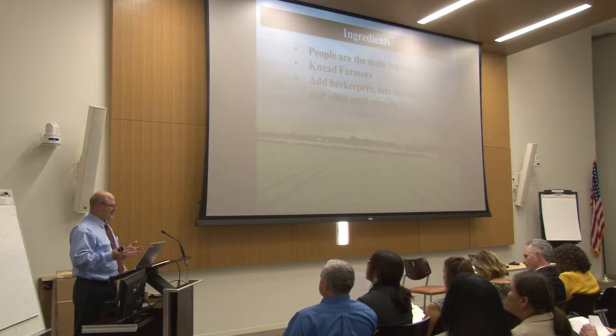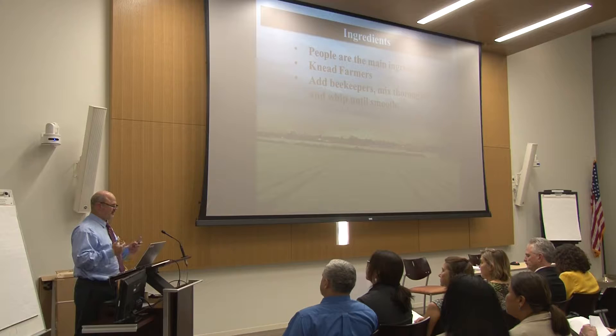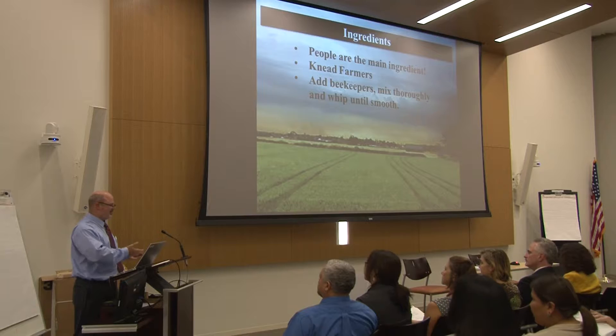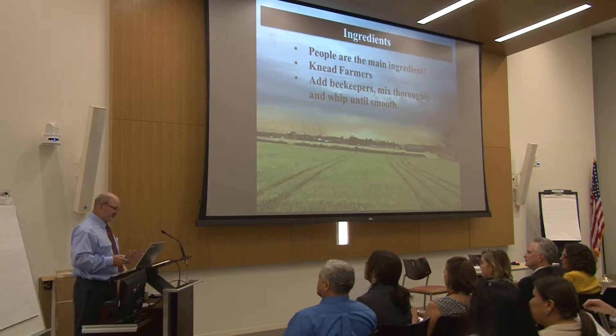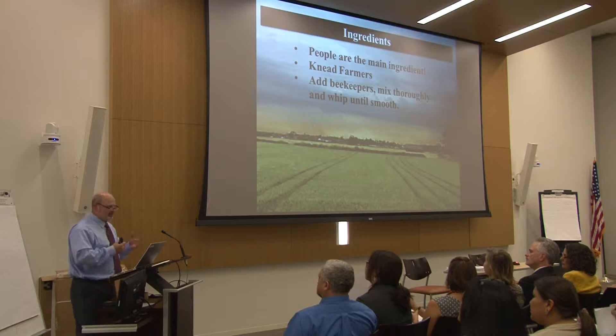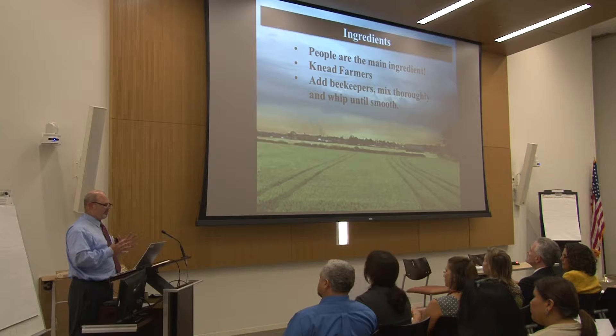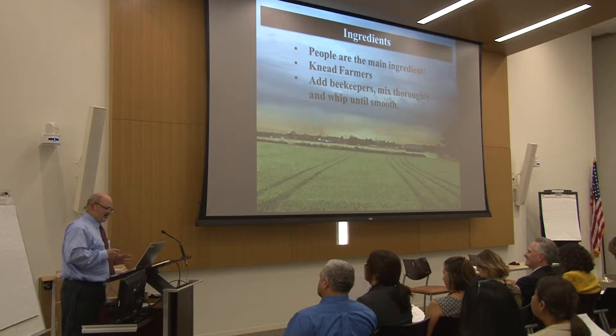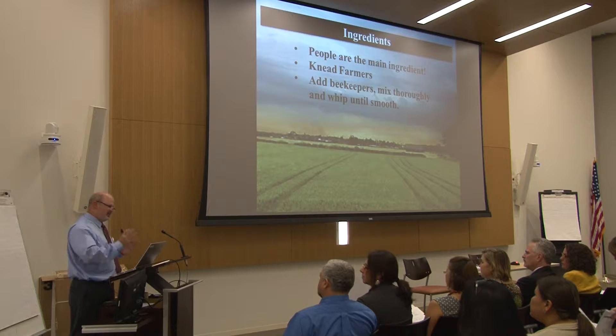Our row crop producers and beekeepers did not know what each other's problems were. The general rule was: beekeeper calls farmer, says 'Can I put my bees on your farm?' Farmer says 'Yeah, just don't put them in the turn row.' At the end of the year, he gets about three gallons of honey — that was the extent of their relationship. You've got to bring your farmers in. They don't know they've got a problem, so you really have to get the message across: you may not want to be involved, but you're involved up to your neck.